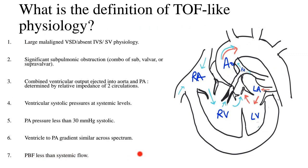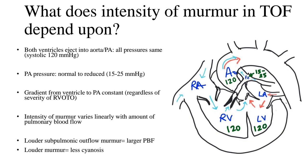These seven points, if present, tell us that a particular complex congenital structure has TOF-like physiology. An important question is: what does the intensity of the murmur heard in Tetralogy of Fallot depend upon? The murmur in TOF is not across the VSD because it is very large. The only structure giving rise to a murmur is the sub-pulmonic and valvar obstruction. Both ventricles eject into the aorta and pulmonary artery, and the systolic pressures of both ventricles and the aorta are equal — if the systemic aortic pressure is 120, RV and LV systolic pressures are also 120.